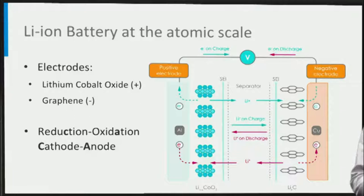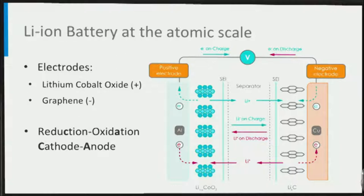Charging the battery is achieved by applying a current opposite to discharging, which requires a voltage larger than the battery open circuit voltage. This drives the electrons back from the positive to the negative electrode via the external circuit, and thereby also the lithium ions are driven back. In this case, electron production and consumption are reversed, and thus also the anode/cathode assignment switches between discharge and charge, as opposed to the negative/positive electrode assignment, which remains the same.